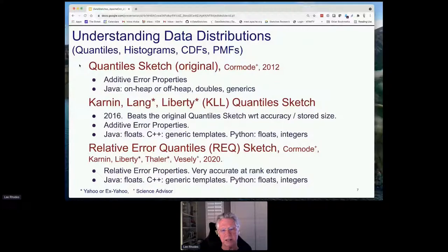The next major category of sketches in the library involves understanding data distributions. Things like the quantile sketch, originally developed by Graham Cormode and others around 2012, has additive error properties. It's on the heap or off heap. Our implementation uses doubles as well as generics. A newer quantile sketch with slightly different properties is called the KLL sketch, developed by several members of our team and published in 2016. It beats the original quantile sketch with respect to accuracy and stored size, and it's been implemented in Java, C++ and Python.